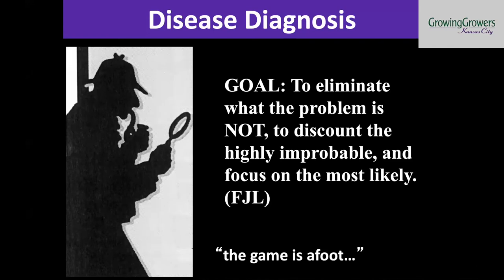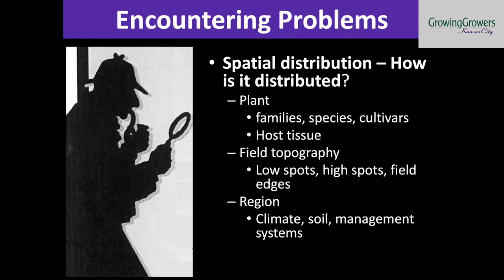For example, somebody in a recent listserv discussion mentioned maybe the tomato has bacterial wilt — and it's really improbable that anybody has bacterial wilt in Kansas City. If they do, you might need to call APHIS about that. One of the first things we look at is the spatial distribution. Are you seeing it across multiple families and species and varieties of crops? Most plant pathogens are fairly specific to their hosts. So if you're seeing problems across multiple different types of hosts, it's pretty unlikely that's caused by a plant pathogen.